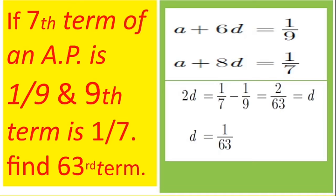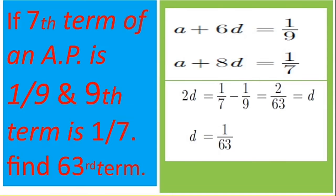2D equal to 1 by 7 minus 1 by 9, that is 2 by 63. When we cross multiply, we will get 2 by 63. So 2D equal to 2 by 63, so D will be 1 by 63.